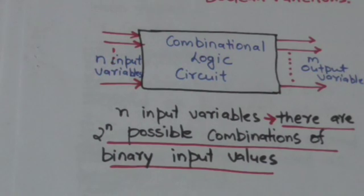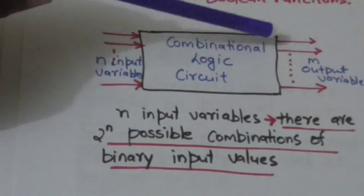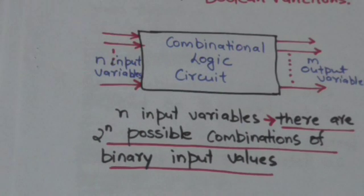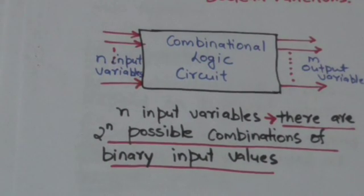A combinational circuit can be described by m Boolean functions, one for each output variable, expressed in terms of n input variables. The operation which a combinational circuit performs can be specified by a set of Boolean functions. If the circuit has m output variables, then we need m Boolean functions to describe that combinational logic circuit.